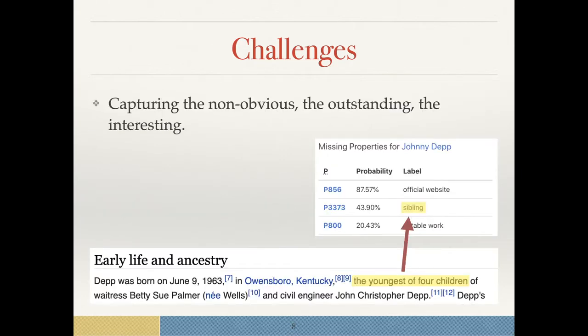Finally, our task is to capture the non-obvious, the outstanding, the interesting. With this example, Johnny Depp, it's easy to find properties which apply to an actor. But if an actor has siblings, it's actually only clear on the individual entity. We need to take the input from the textual description from Wikipedia to be able to predict this property on an entity.